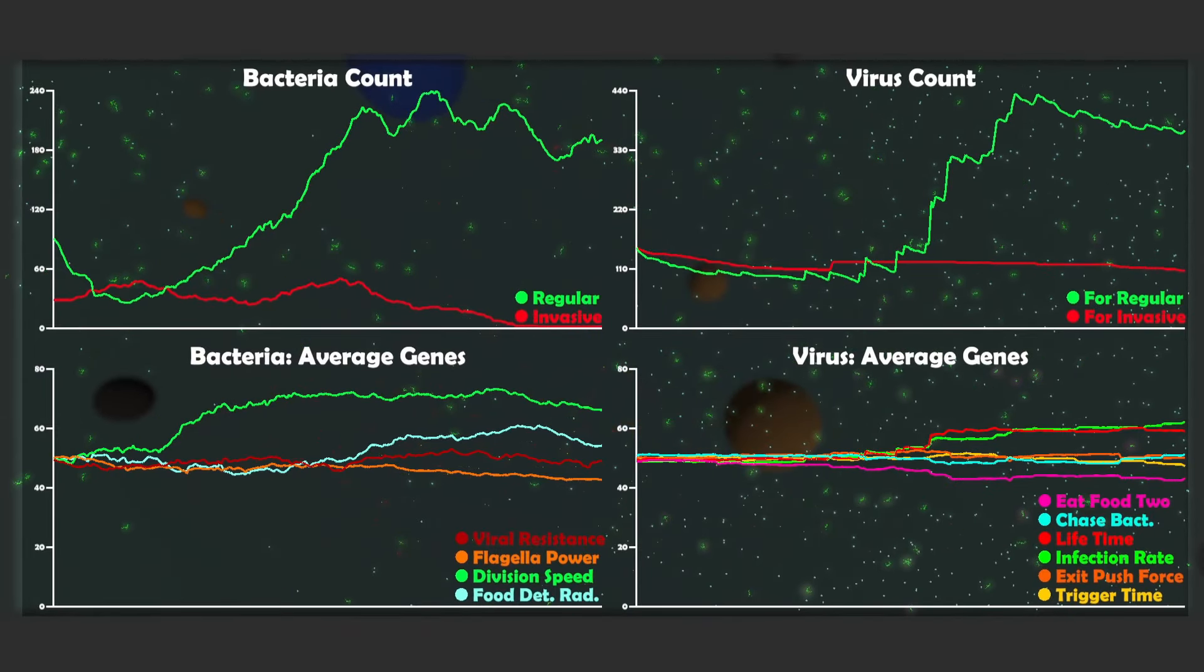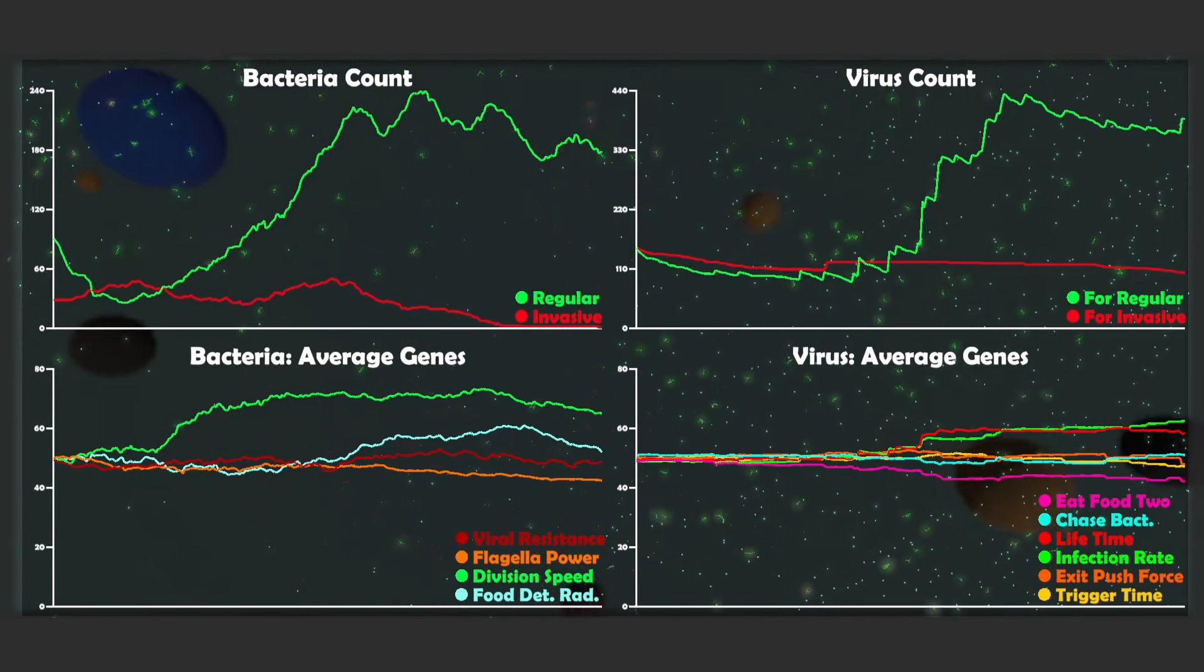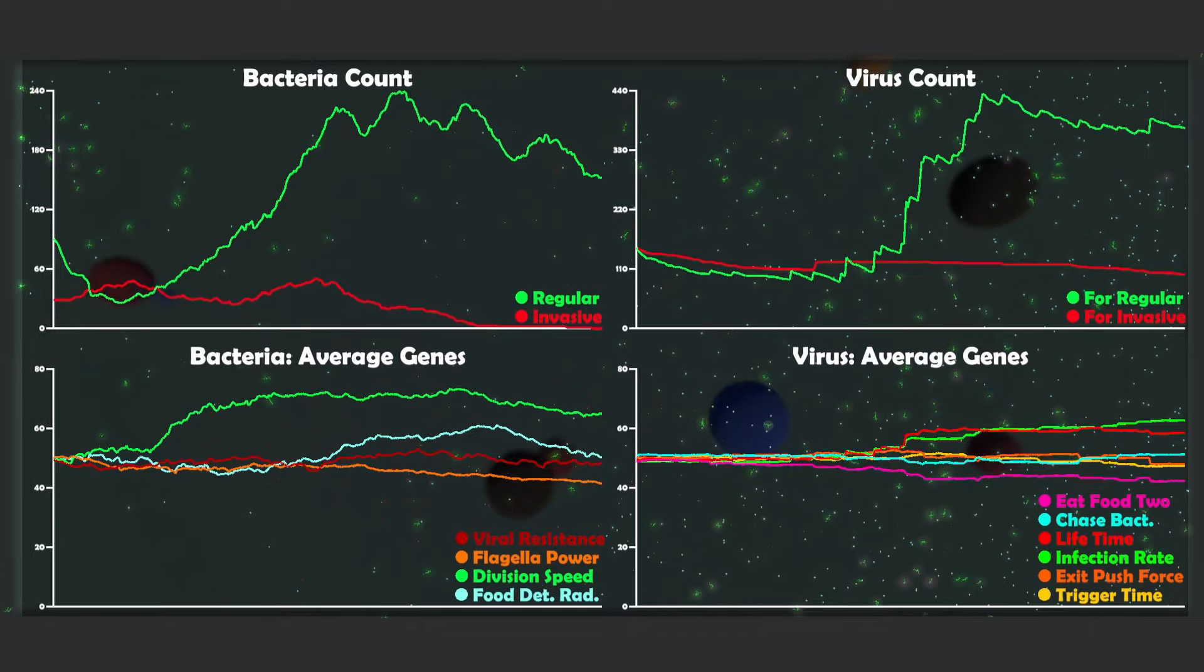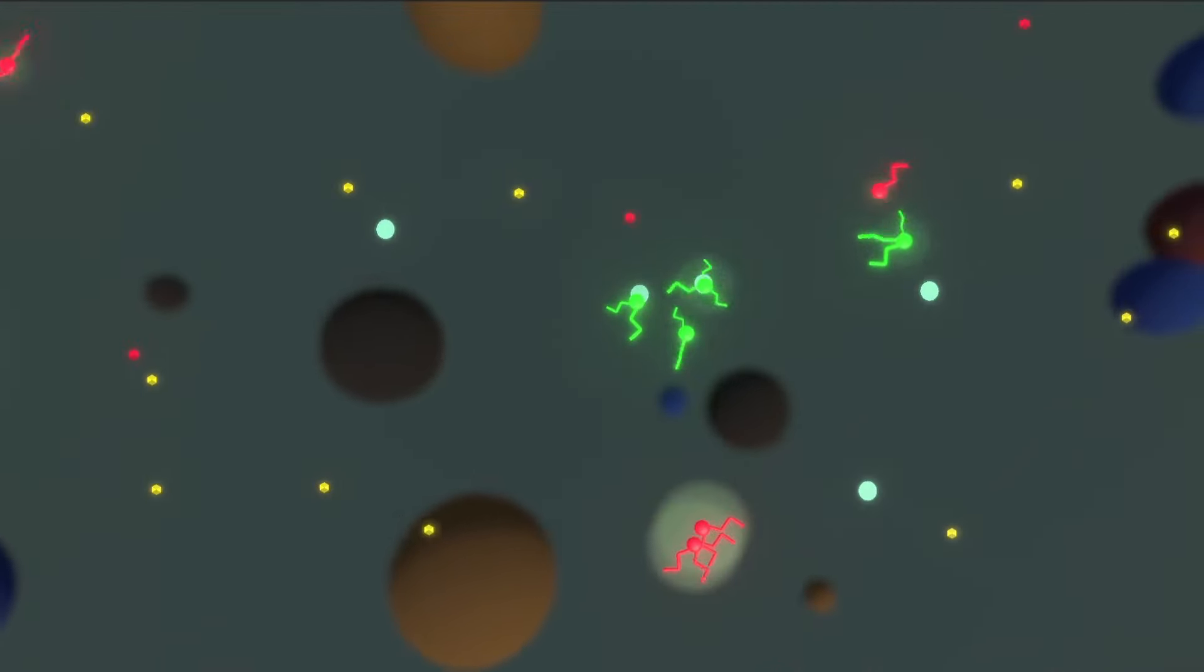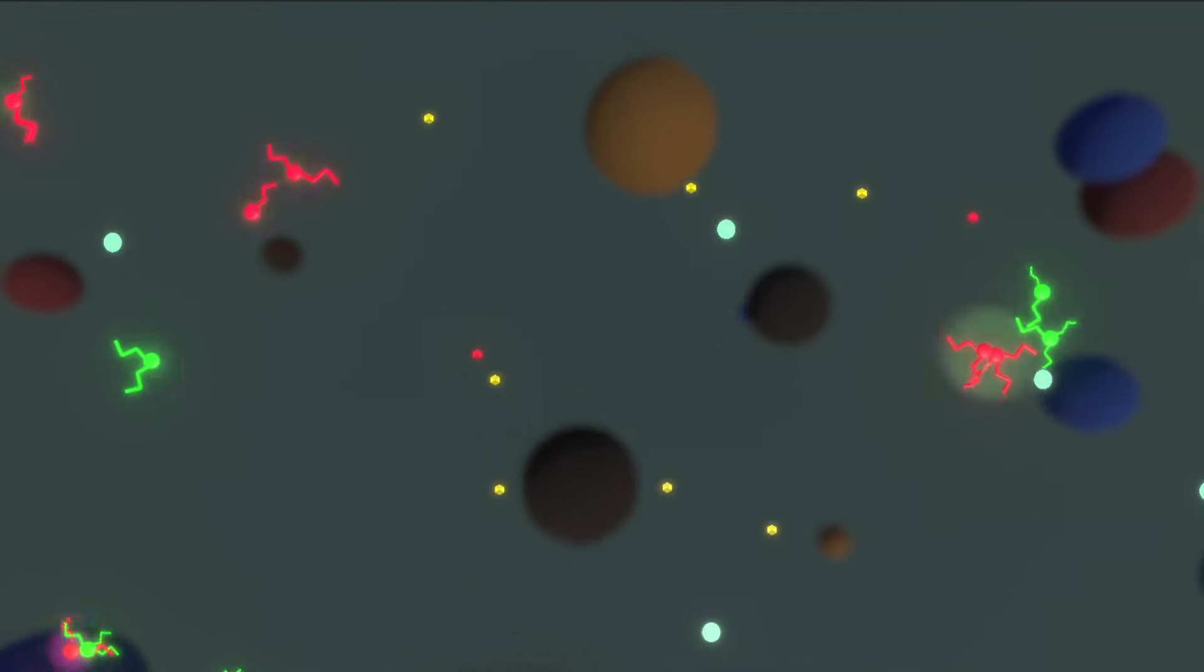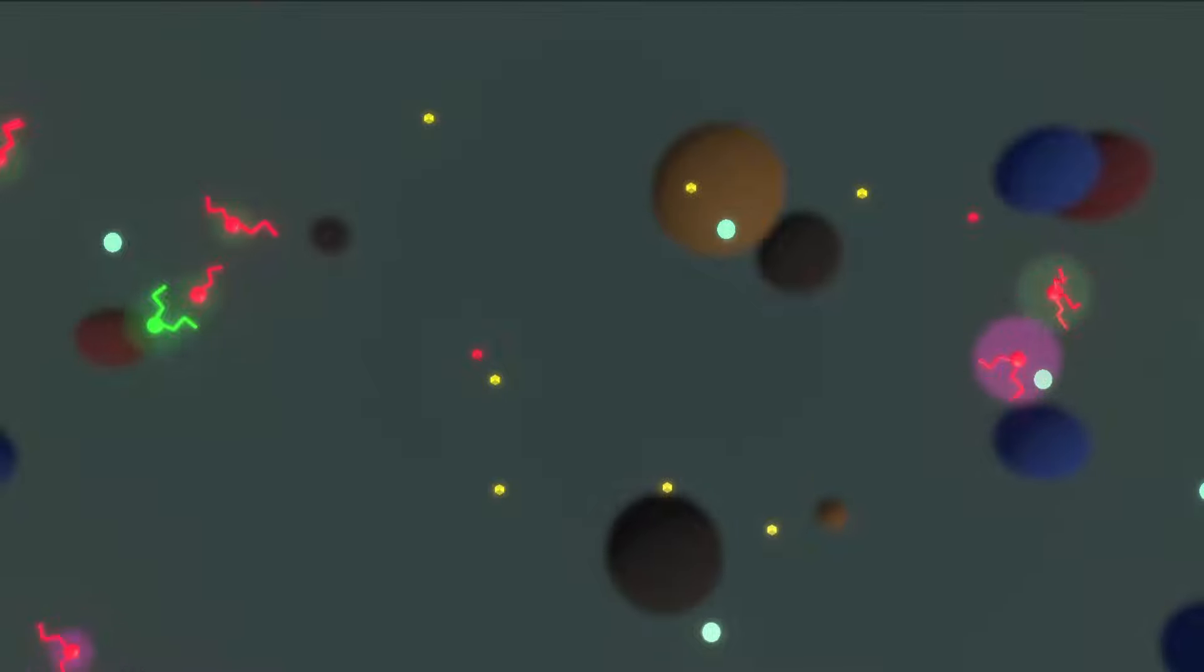But then I think there was still interesting things to understand from this simulation, where there was a big battle between the regular bacteria and the viruses that targeted the regular bacteria. Even though we can't see them with our naked eyes, there's a crazy arms race that happens all around us all the time. And I hope that these simulations were able to help you appreciate that a little bit more.